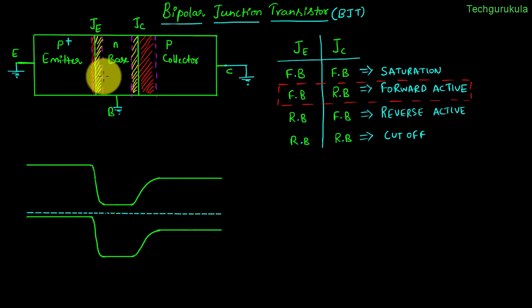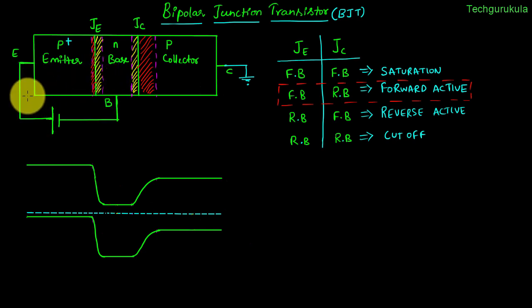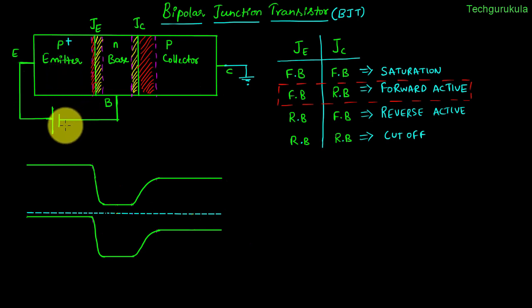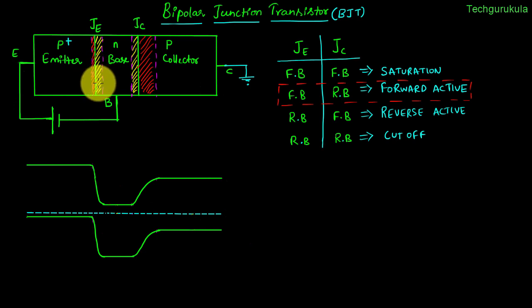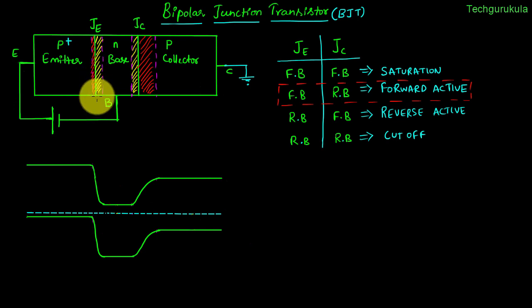Let us apply forward bias to the emitter junction by applying higher potential to the P-type emitter and lower potential to the N-type base. Because of the applied forward bias across the emitter junction, the electric field in the depletion region would decrease, the depletion region would decrease, and the built-in potential would also decrease. As a result, the depletion width would also decrease.